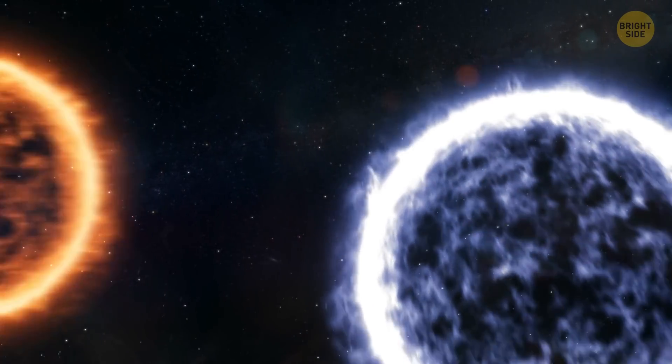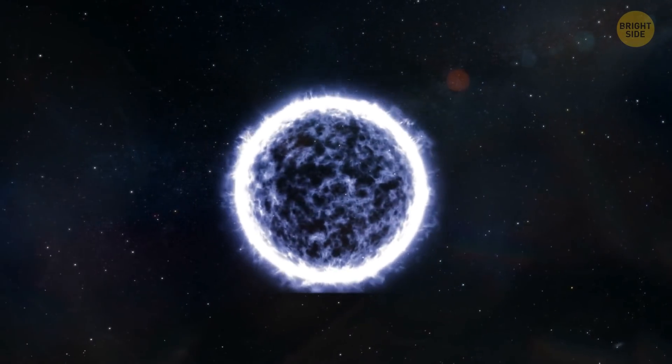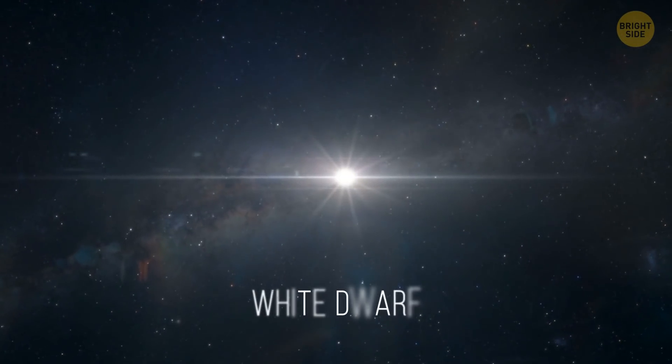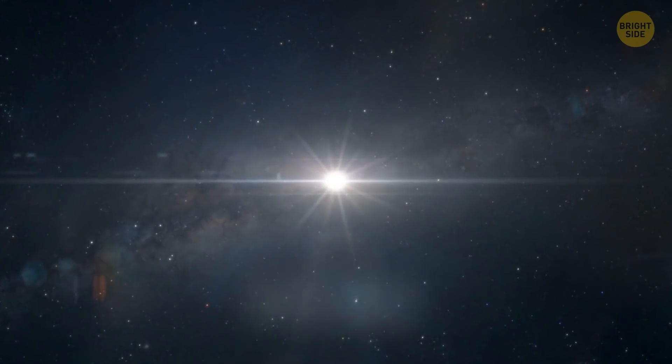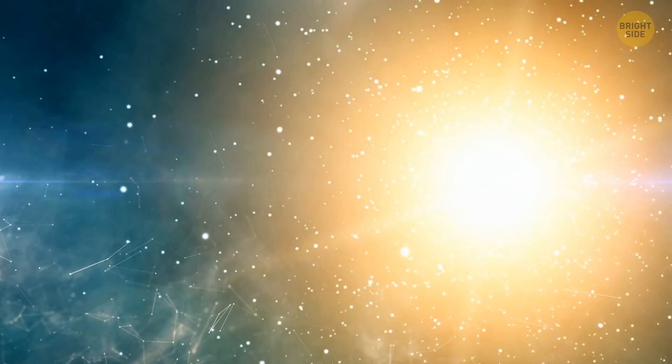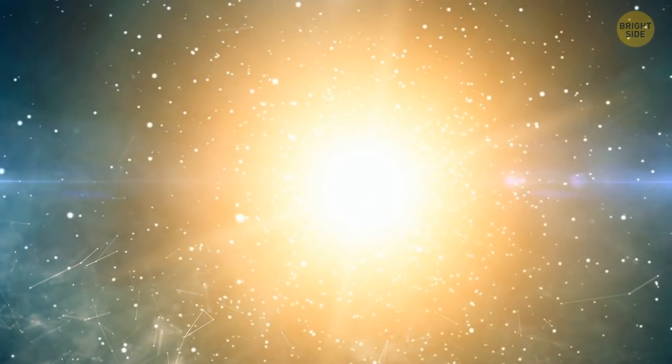By the way, when a star similar in size to our sun runs out of its fuel, it turns into a white dwarf. It expels most of its outer material, and only the star's hot core remains intact.